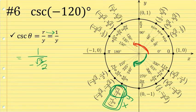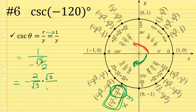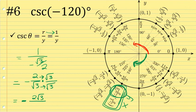As discussed in the previous example, one over a fraction is the same as the reciprocal of that fraction. So one over negative √3/2 is equivalent to negative two over √3. Just like the previous problem, this is not rationalized. I can rationalize it by multiplying the numerator and denominator by √3. Multiplying across the numerators gives negative two times √3, and in the denominator √3 times √3 is √9, which is just three. After rationalizing, I have negative two√3 over three.